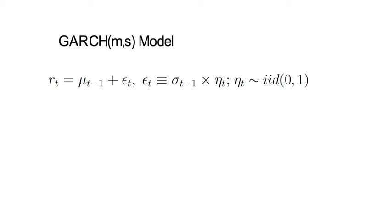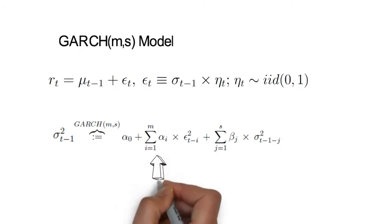Now the GARCH(m,s) parameterization assumes that this conditional variance sigma square t minus 1 can be written as follows. So you see it is linear in the past m squared return innovations